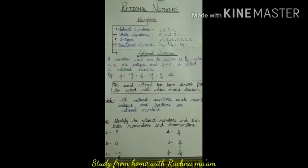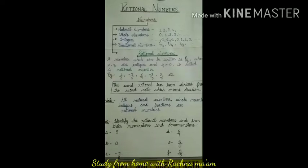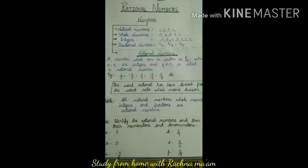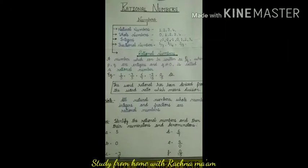To give meaning to p out of q equal parts of a unit, and also to give meaning to the quotient p upon q of natural numbers, the system of natural numbers can be extended in another way to have fractions. That means, when we want to show any part of something — how much of it is some part — we needed a fractional number.